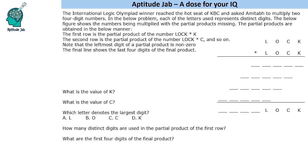Hello everyone, welcome to Aptitude Jab. This is a cryptarithmetic puzzle involving multiplication. You need to multiply two four-digit numbers, and in the given problem each of the letters represents distinct digits. The figure shows the numbers being multiplied with the partial products missing.